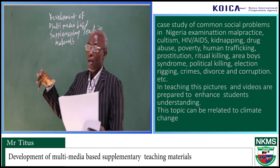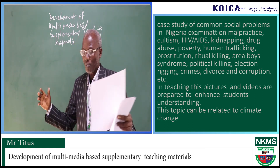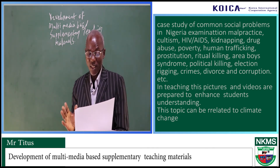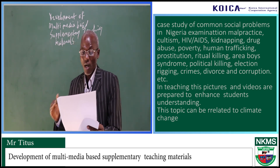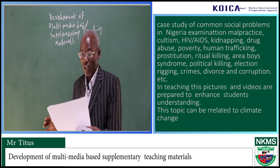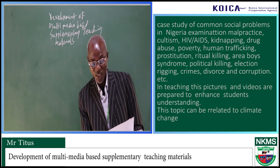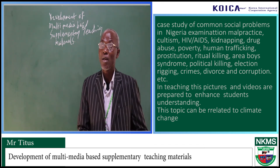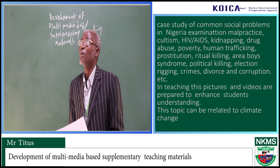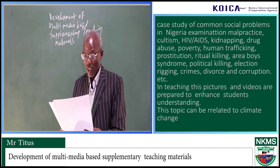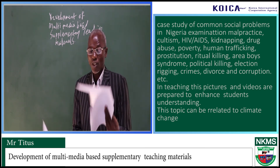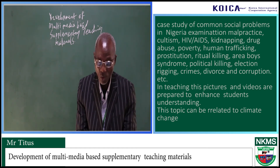Therefore, in teaching this topic, pictures are printed, videos are prepared, and then presented to the students. Poverty is another serious social problem. Others include corruption, lack of parental care, peer group influence, influence of the mass media, and proliferation of arms and ammunition — which is a very serious problem we are facing in Nigeria today. The militants in the south and herders carrying arms are real social problems. When you teach these topics and show students practical pictures, they will be able to visualize and see the reality.